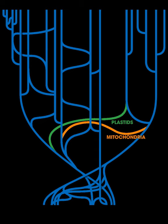A gene that allowed ferns to survive in dark forests came from the hornwort, which grows in mats on stream banks or trees. The neochrome gene arrived about 180 million years ago.